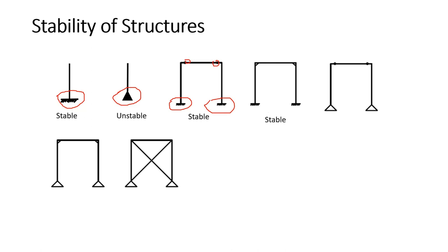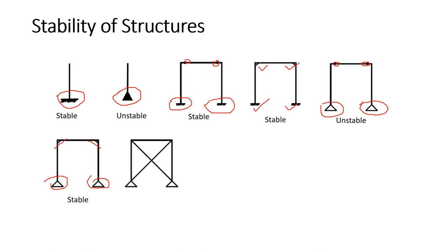Coming to the next one, it is obviously stable since along with the fixed support at the bottom, you also have a moment connection between beam and column. The following frame is clearly unstable because it has a pinned support at the bottom along with a shear connection at the top between beam and column. The next one is stable — though you have a pin support at the bottom, you have a moment connection between beam and column.